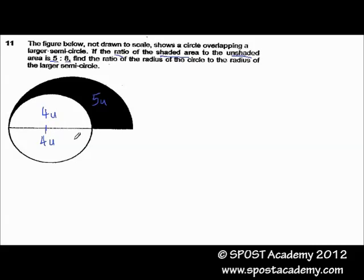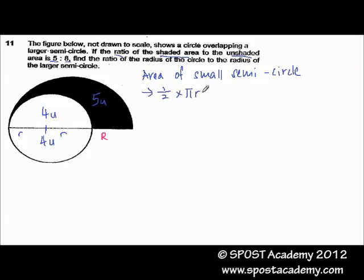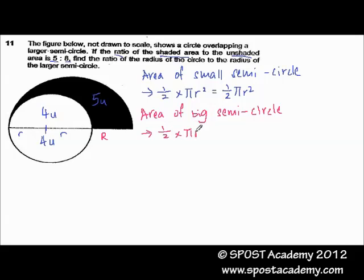We can name the small semicircle's radius as small r, while the larger semicircle will have big R to represent it. The area of the small semicircle is equal to half times pi r squared, so we get half pi r squared. And the area of the big semicircle will be half times pi R squared, giving us half pi R squared.